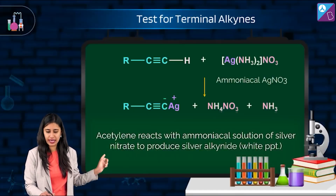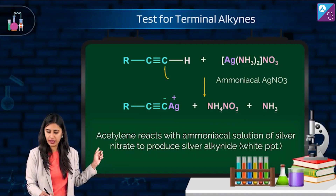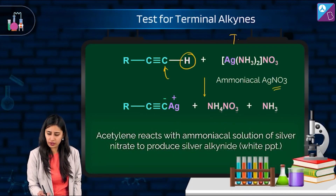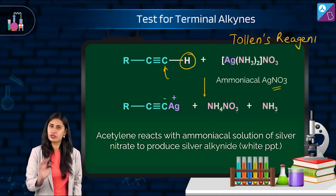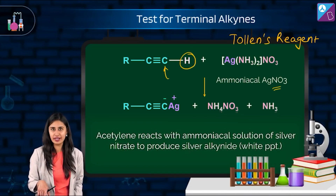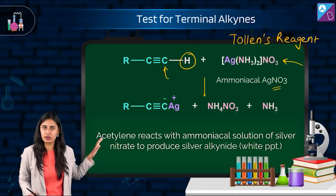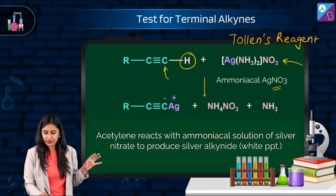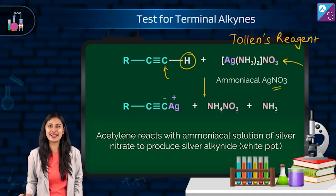The reaction is as follows: we take the terminal alkyne with its acidic hydrogen and add ammoniacal silver nitrate. Sometimes you might also see Tollens reagent written — do not get confused, both are the same. So, acetylene reacts with ammoniacal solution of silver nitrate to produce silver alkynide.